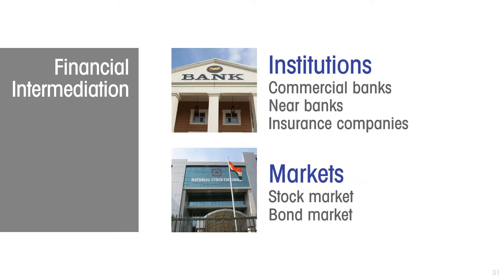Credit unions and building societies operate in the same way. Even insurance companies, which you don't think of as carrying out this role — mostly the premiums that are paid on insurance policies become a pool that the insurance company itself invests in instruments that are used to fund investment. So the institutions in the financial sector are one channel through which the financial sector can bring together the surplus of savers and the borrowing needs of investors.